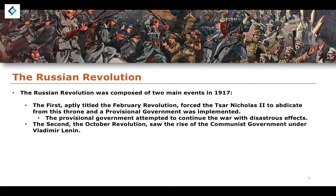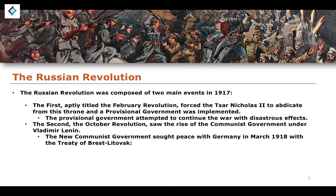Sometimes you would argue these could be seen as the Russian Revolutions, plural, but they are two events culminating in 1917. The October Revolution saw the rise of the communist government under the leadership of Vladimir Lenin. Lenin issued something known as the April Thesis, which essentially declared the goals of peace, land, and bread. Peace was the key goal for Lenin — he wanted to see an end to the First World War. The new communist government sought peace with Germany in March 1918 with the Treaty of Brest-Litovsk.